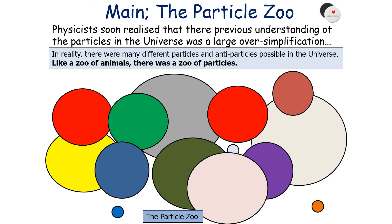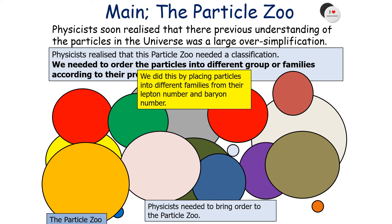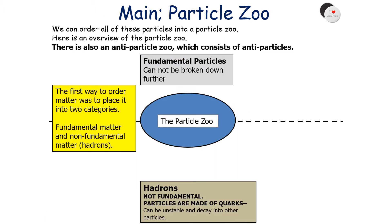In reality, physicists realised that there were many, many different particles and antiparticles possible in the universe. Like a zoo of animals, there was a zoo of particles. We needed to bring order to the particles by putting them into different groups or families according to their properties — a classification system for our particle zoo. We did this by placing particles into different families based on quantities we call lepton number and baryon number.